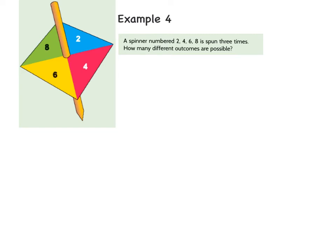Example 4 talks about a spinner. Here we have a spinner that is numbered 2, 4, 6, and 8. It's 4 equal sections. The spinner is spun 3 times. So how many different outcomes are possible? The 3 times stands for the 3 events. Event 1 is the first spin, event 2 is the second spin, and event 3 is the third spin.